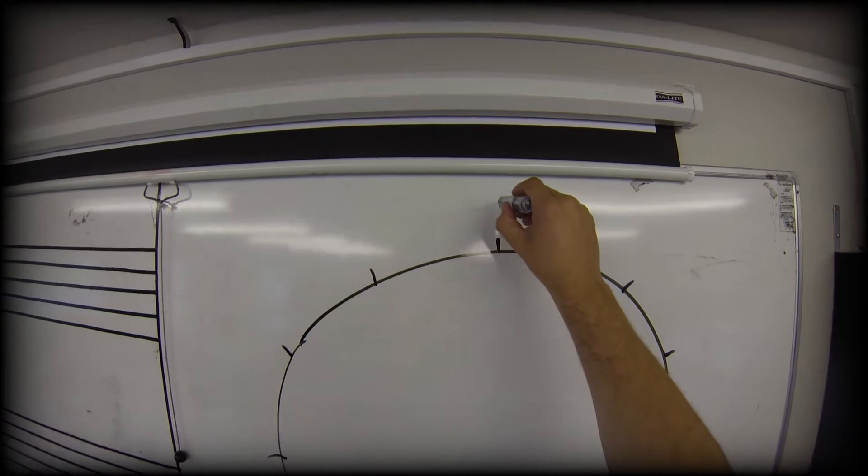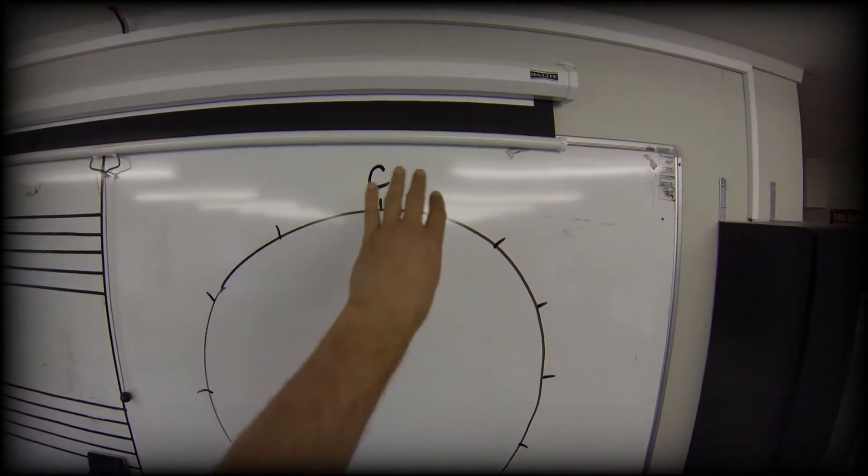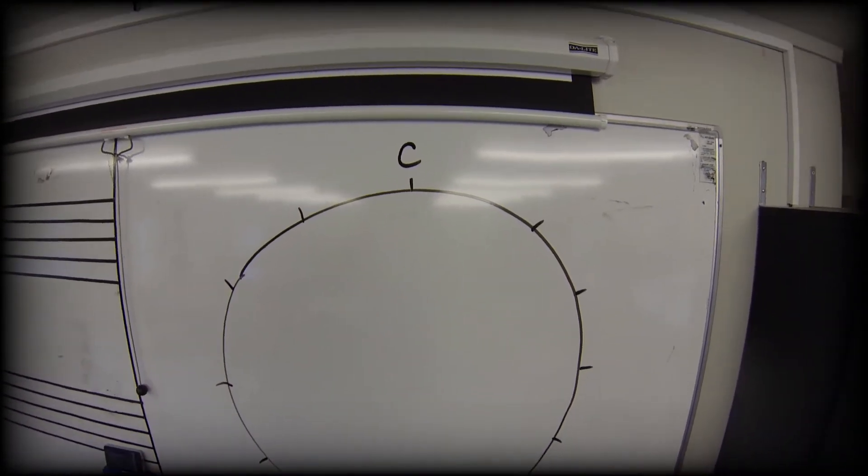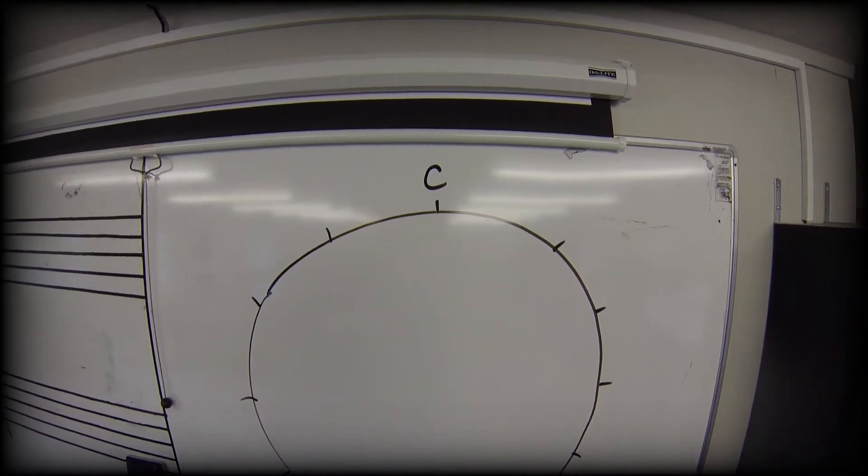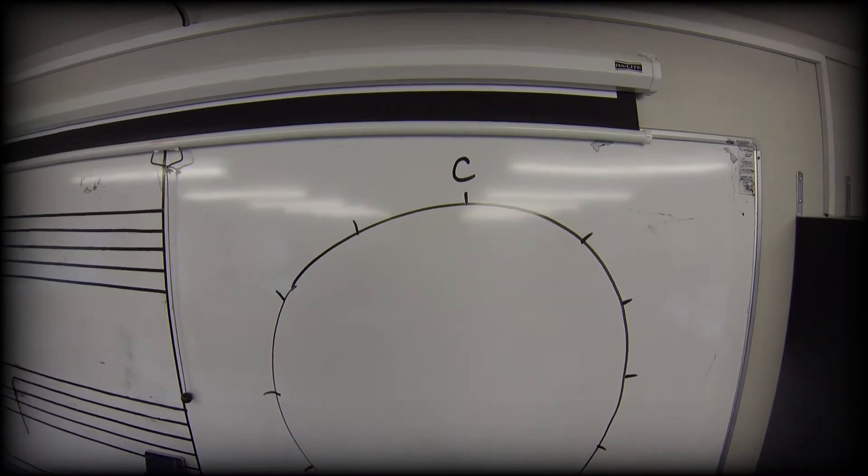My top note is C. And then I'm going to go around the clock in a clockwise direction, and I'm going to put in the other note names. You'll see that most times I go two steps for each note name, but a couple of times only one step, and I'll go through that in another video.